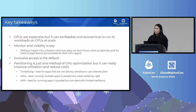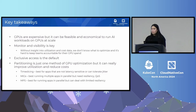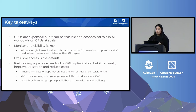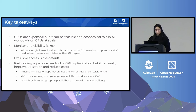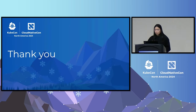Some additional details about the partitioning techniques: time slicing is best for apps that are not latency sensitive or can tolerate jitter. MIGs is best for running multiple apps in parallel where they need to be resilient with high quality of service. MPS is best for running apps in parallel that can deal with some amount of limited resiliency. That is all — thank you so much and I hope you have a great rest of your conference.